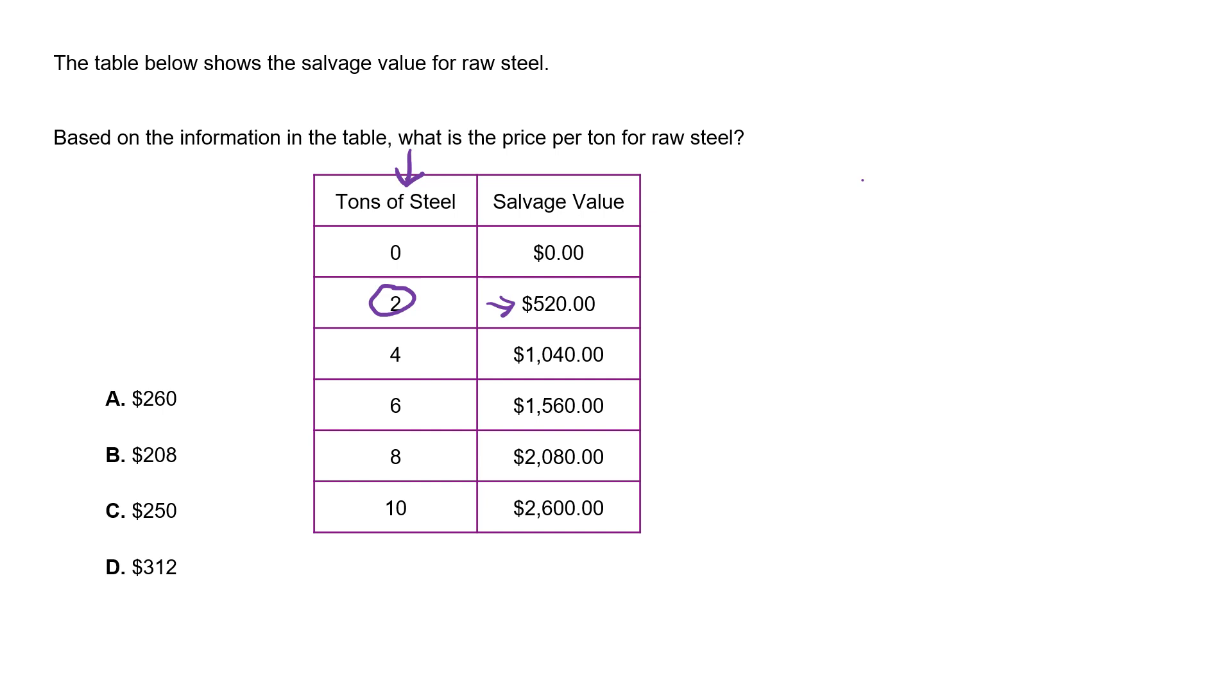We want to know the price per ton. We're going to put the price - per is another word for division. Let's try that again. Division.